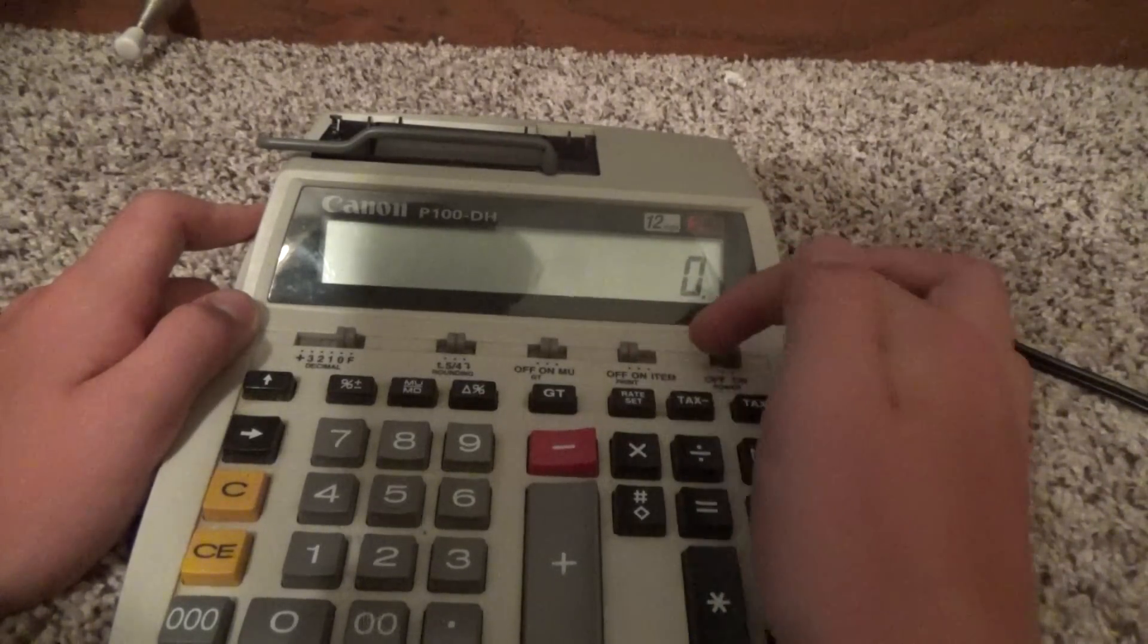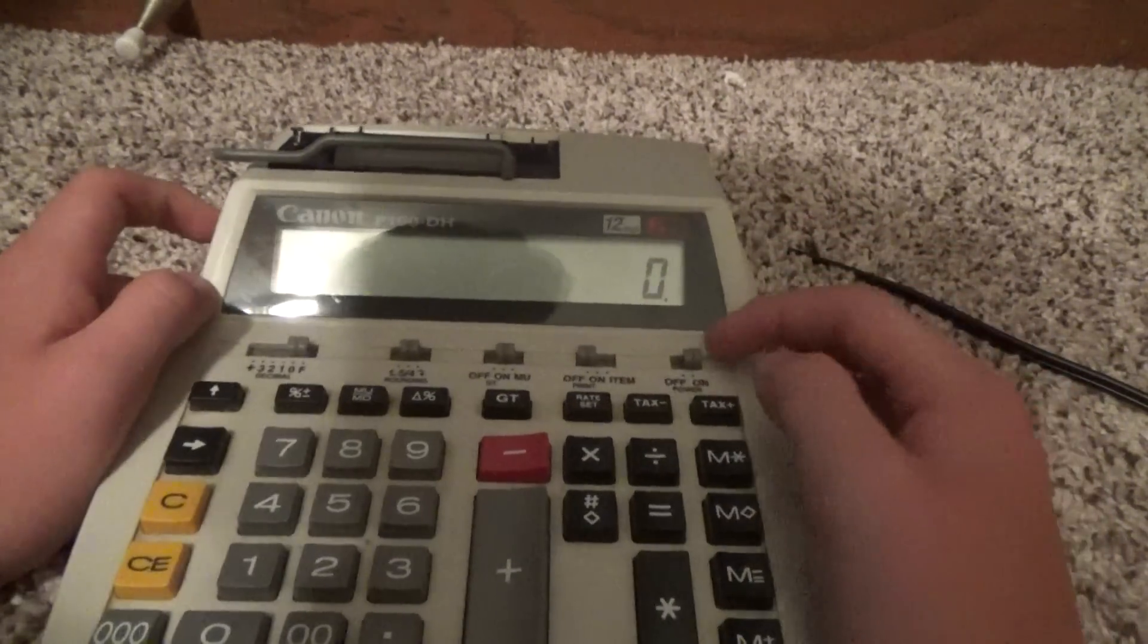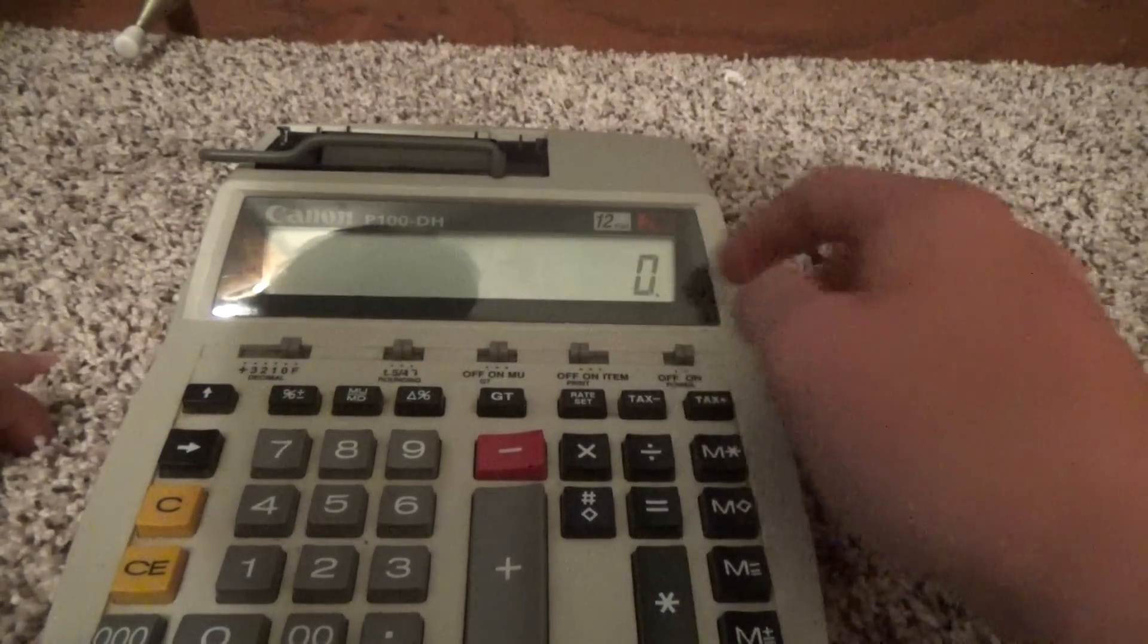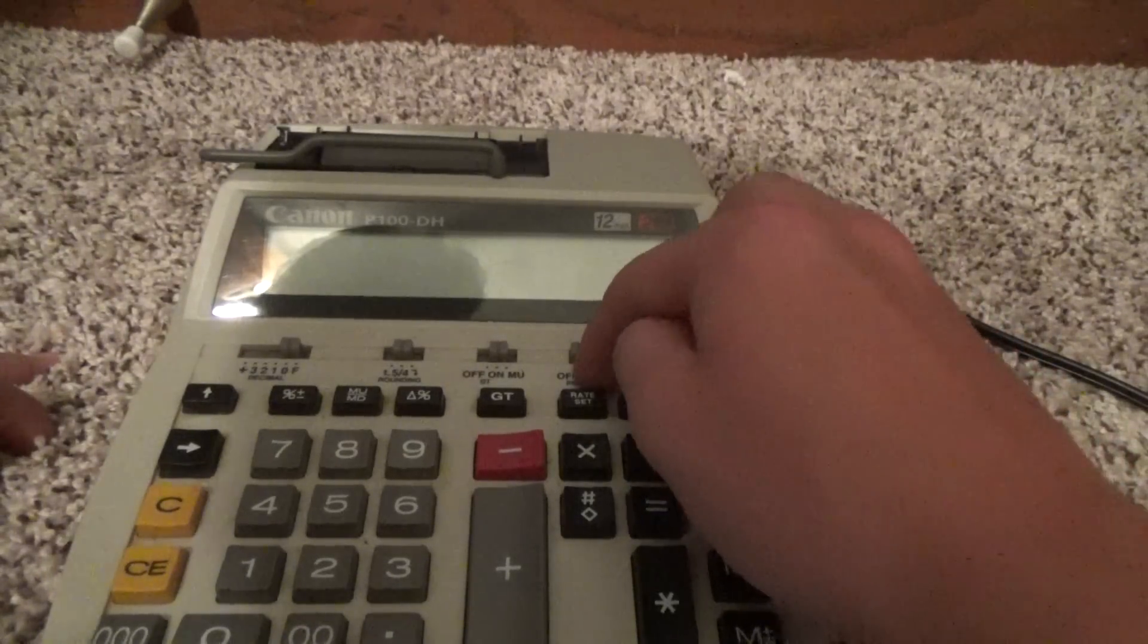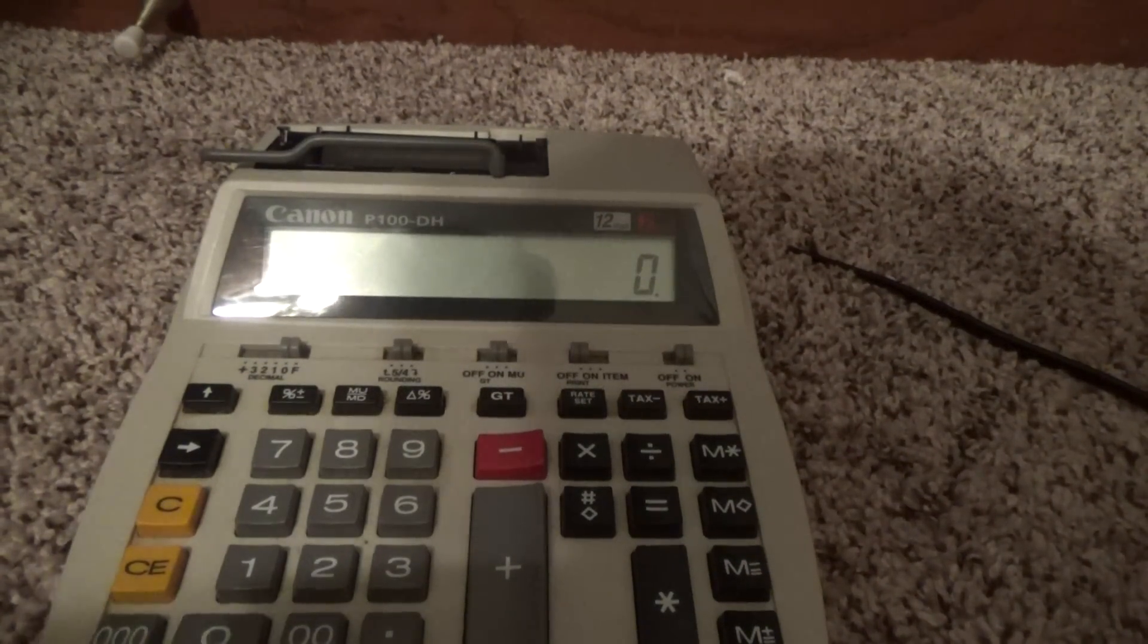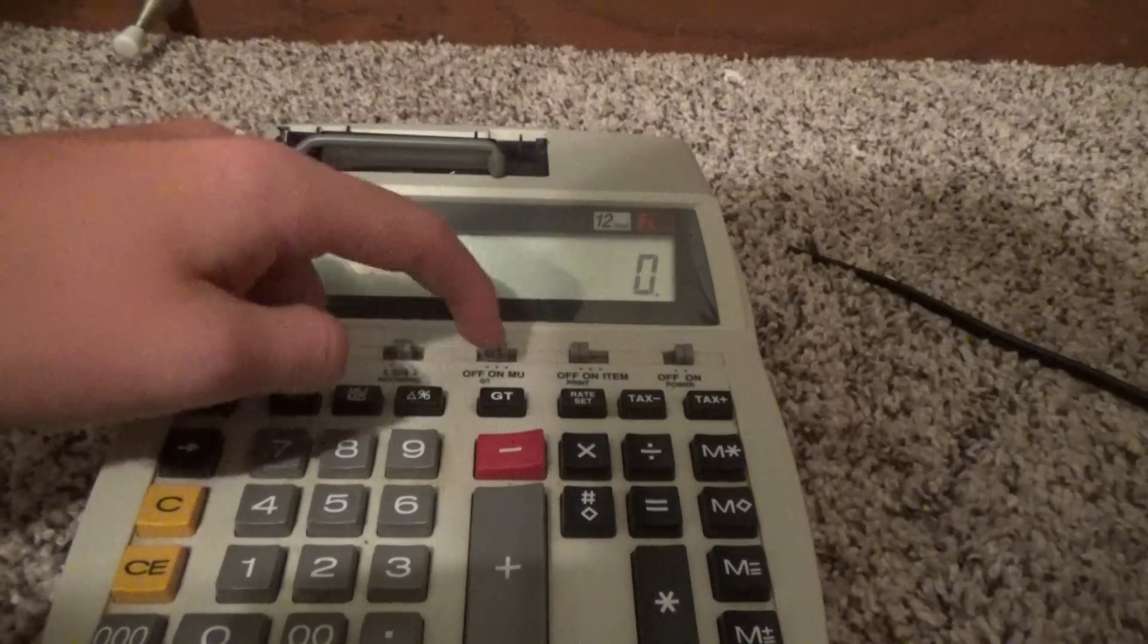Item counter switch right here, here's the item. And then just the on-off power switch right here. Going back to this switch, here's the item counter over here, and then you can adjust if you want printing on or off. And I'm not sure what the Mew button does, so I'll have to look into that.